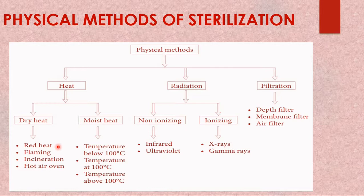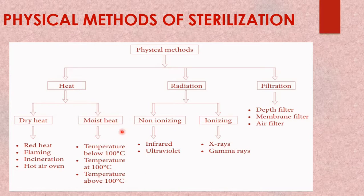Examples of dry heat include red heat, flaming, incineration, and hot air oven. For moist heat sterilization, we have categories below 100°C, at 100°C, and above 100°C — moist heat involves water, either in steam form or direct water form.